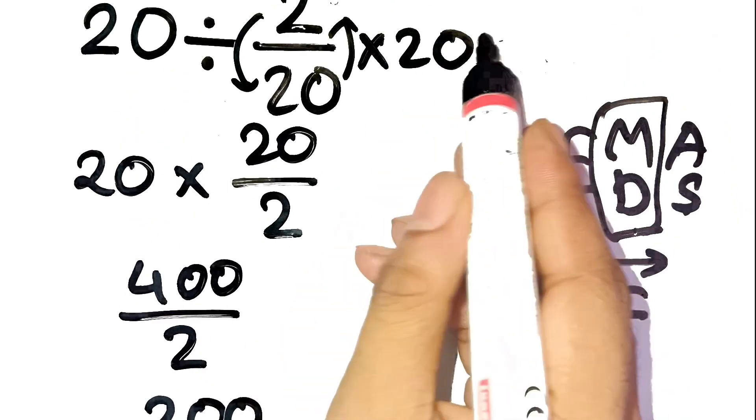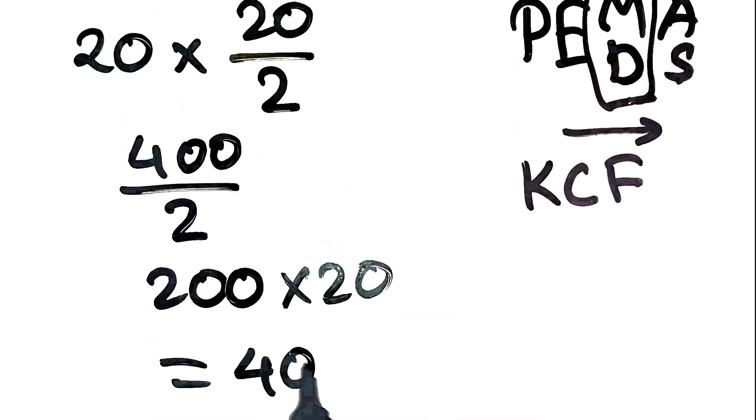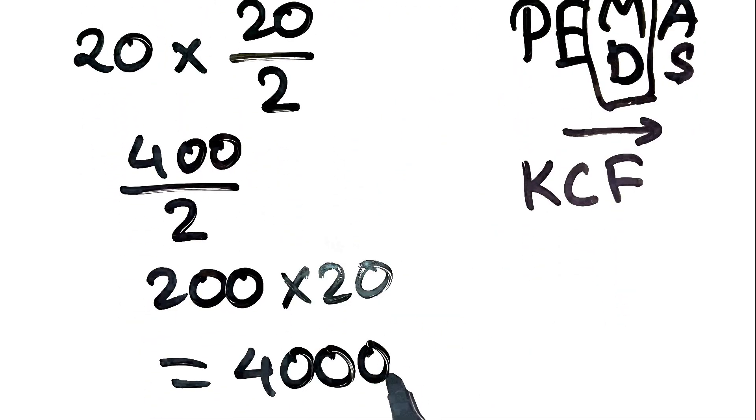Now multiply that result by the last 20. 200 times 20 equals 4,000. So the correct answer is 4,000, not 10.